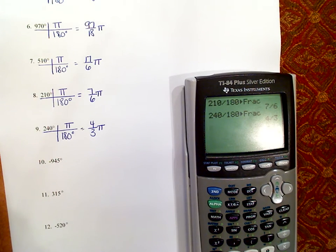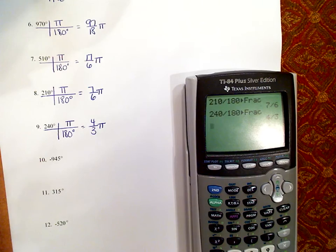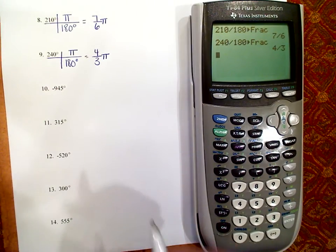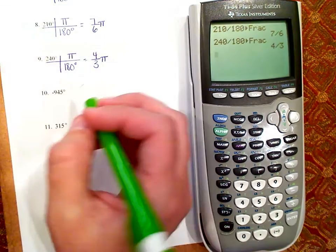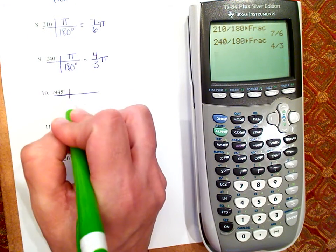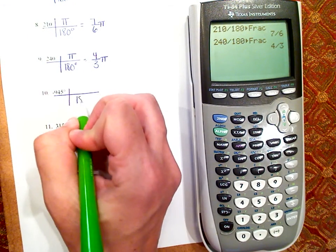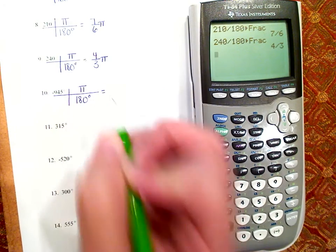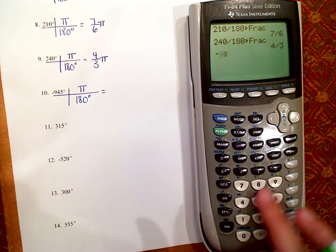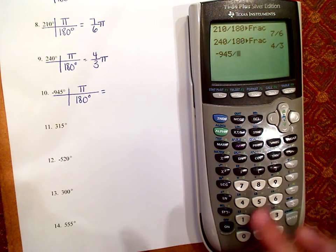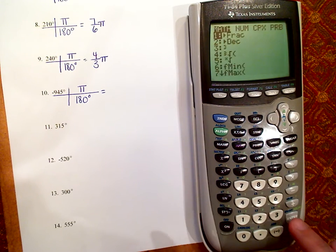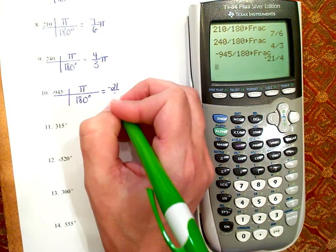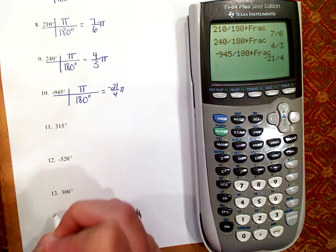Number 10 — it is negative, so make sure your answer is negative. Negative 945 degrees: degrees on top, degrees on the bottom, pi on top. So negative 945 divided by 180, math, enter, enter — is negative 21 over 4 pi.